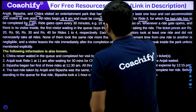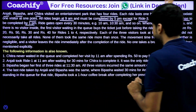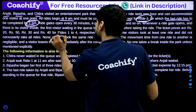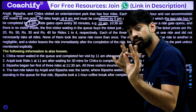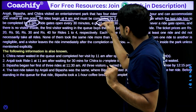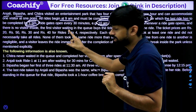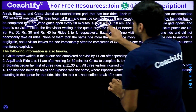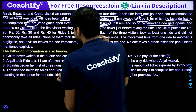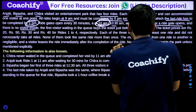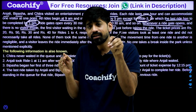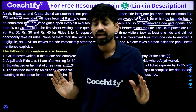To summarize: for all rides, rides begin at 9 a.m. and must be completed by 5 p.m., except for ride three, for which the last ride must be completed by 1 p.m. Ride gates open every 30 minutes — for example, 10 a.m. Note: the first ride actually begins at 9 a.m., not 10 a.m. — 10 a.m. is just an example, so don't get confused. Whenever a ride gate opens and there is no visitor inside, the first visitor waiting in the queue buys the ticket just before taking the ride — meaning there is no waiting time after buying the ticket, though there may be waiting time before.